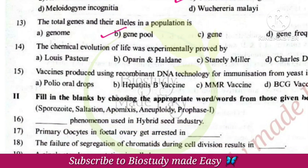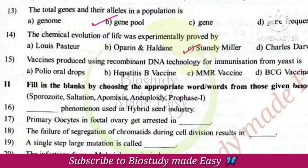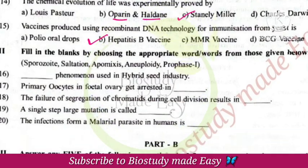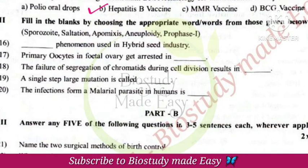Chemical evolution of life was proposed by Oparin and Haldane. Experimental proof was provided by Stanley Miller. Vaccines produced using recombinant DNA technology for immunization — the yeast-produced one — is the Hepatitis B vaccine.